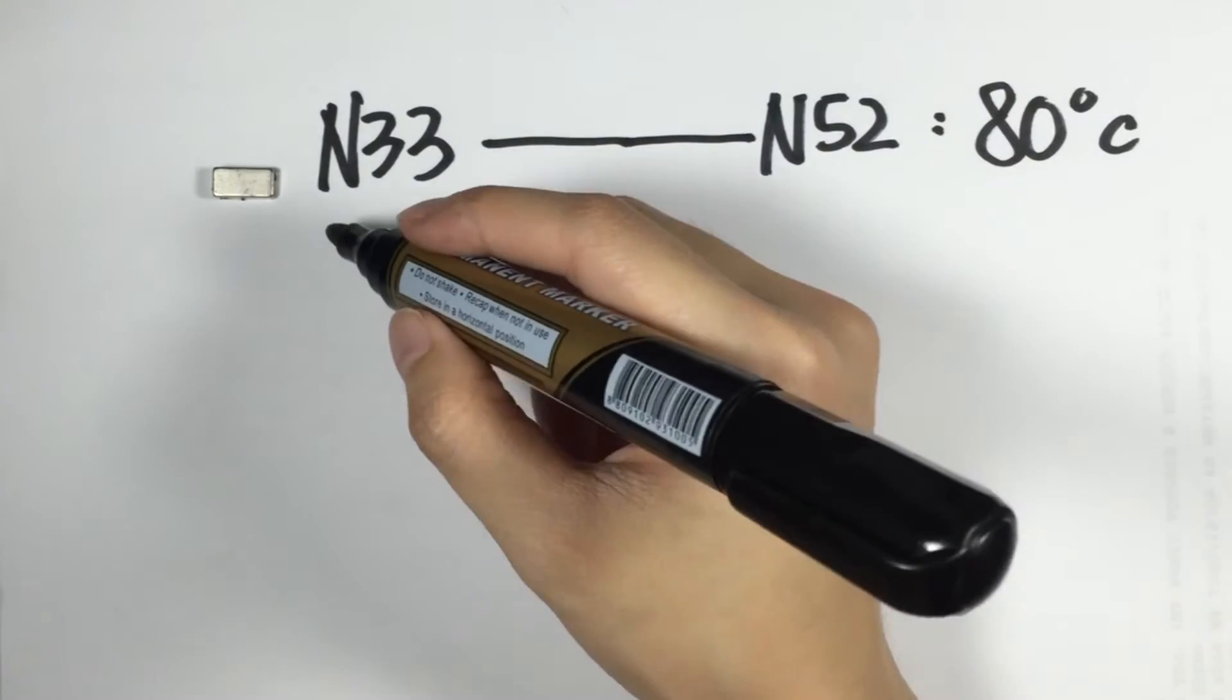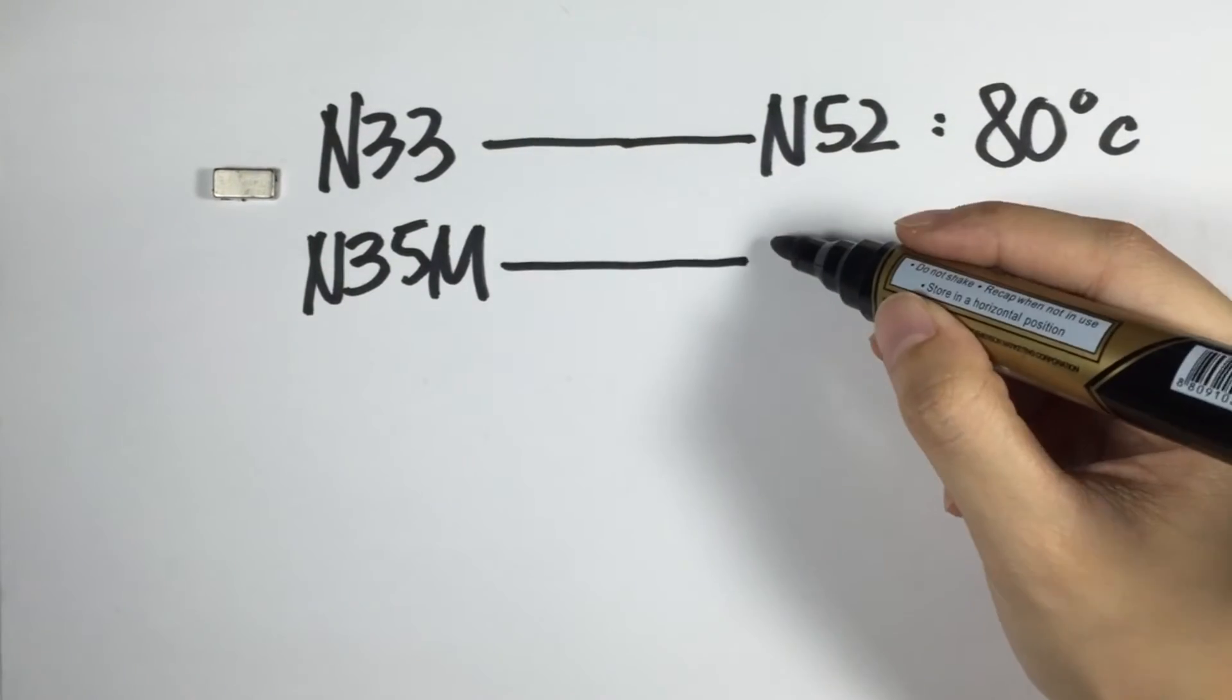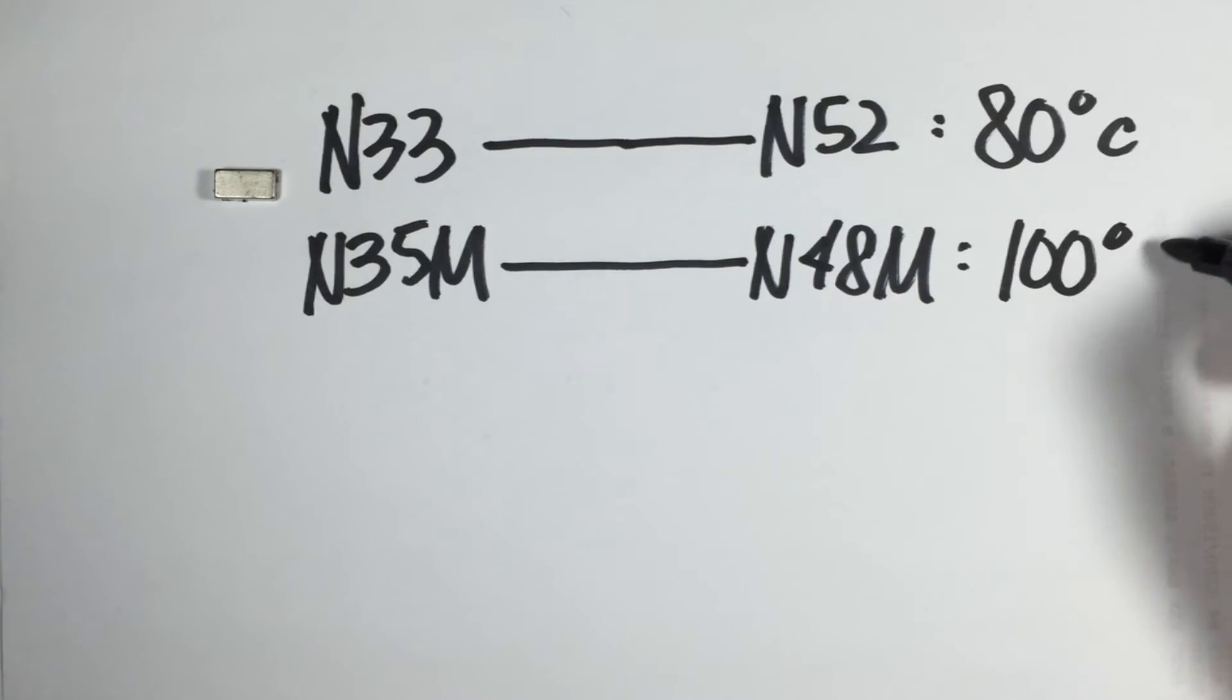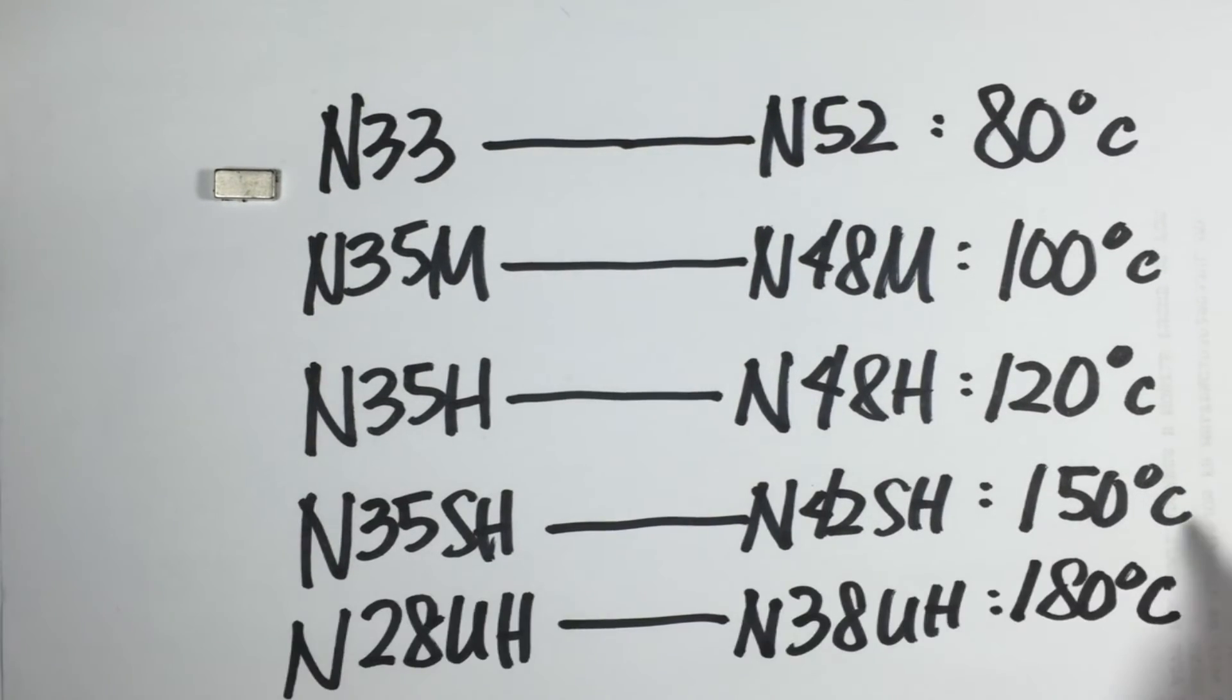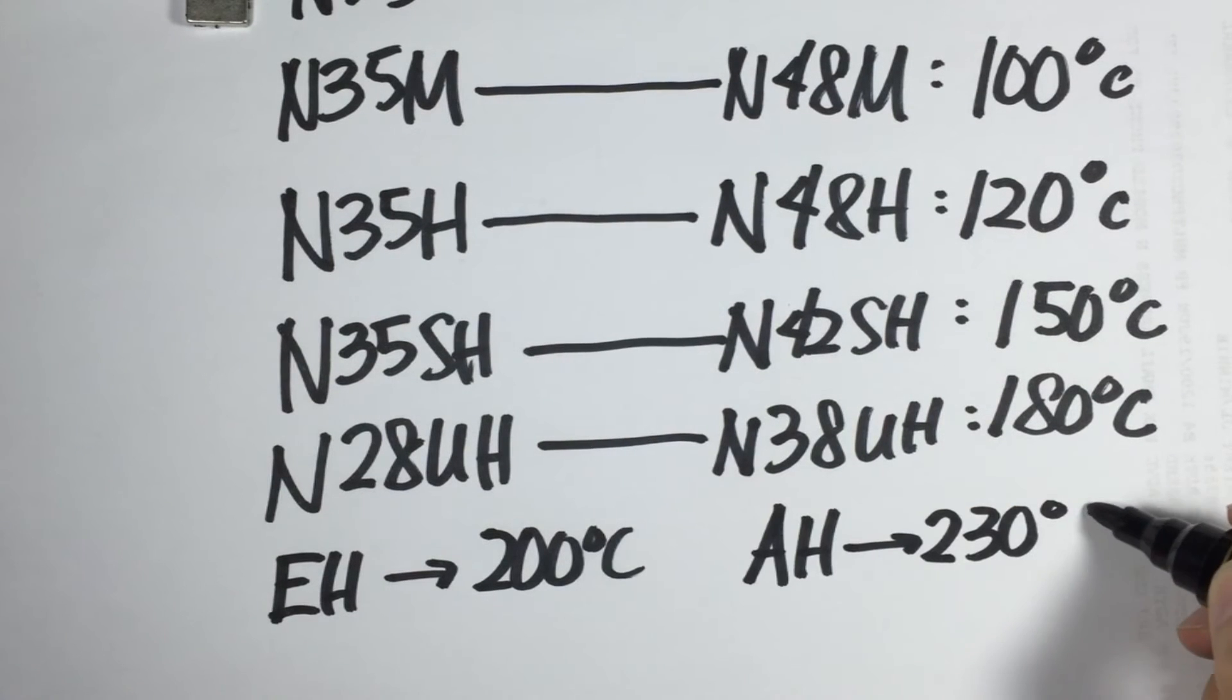We have the M-series that supports a high working temperature, 100 degrees Celsius, the H-series, 120, SH, UH, EH, and AH.